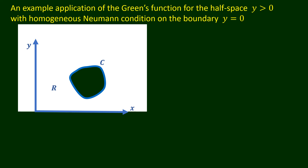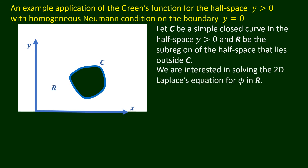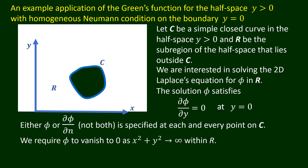We will now look at how the Green's function for the half space y strictly greater than 0, with the homogeneous Neumann condition on the boundary y equals 0, can be used to solve a particular potential problem. Let c be a simple closed curve in the half space y strictly greater than 0, and r be the sub-region of the half space that lies outside c. We are interested in solving the two-dimensional Laplace's equation for phi in the region r. The solution phi satisfies the homogeneous Neumann condition del phi over del y equals 0 on the boundary y equals 0.